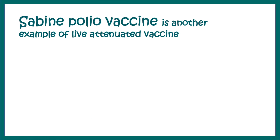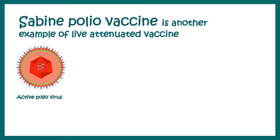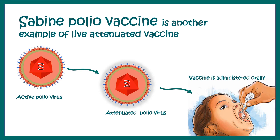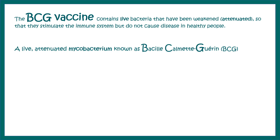There are many more examples. For instance, the oral polio vaccine — the Sabin polio vaccine — formulated by Albert Sabin. In that case, active polio virus is attenuated and incorporated orally, and this largely eradicated polio from the world.